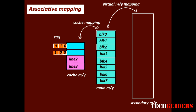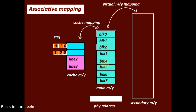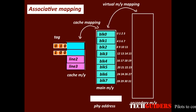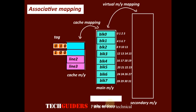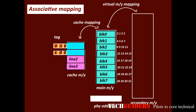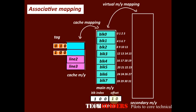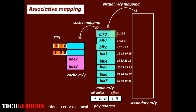When a physical address is generated, it refers to the main memory. In this example, the main memory has 8 blocks, and each block has 4 words, so the physical address is 5 bits. To address each of the 4 words in a block we need 2 bits (block offset), and to address each of the 8 blocks we need 3 bits (block index).